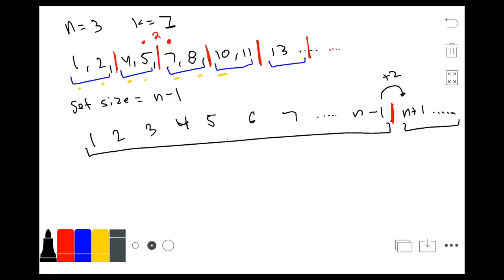In order to get the number of sets, we can see that this would just be k over n minus 1. Basically the kth number which you want, divided by the set size, which is n minus 1. So this is how you would get the number of sets. For example, 7 divided by 3 minus 1, 7 divided by 2 is 3.5.